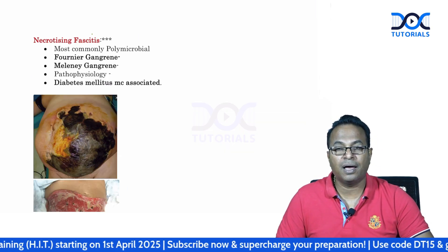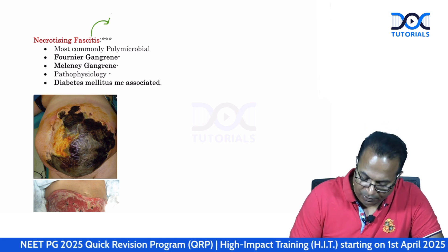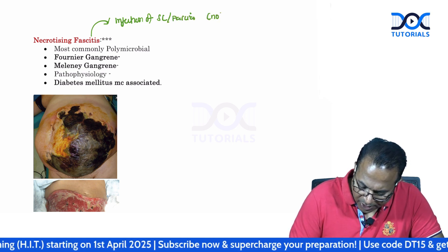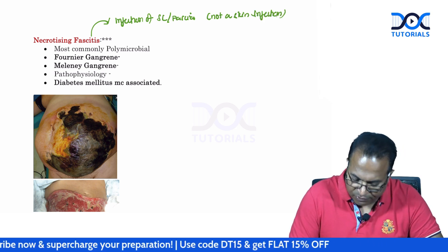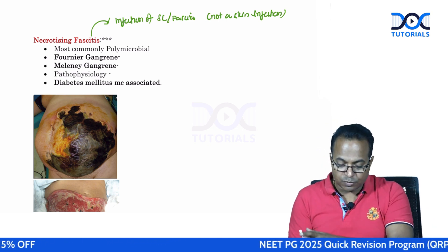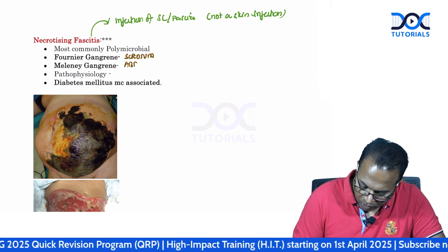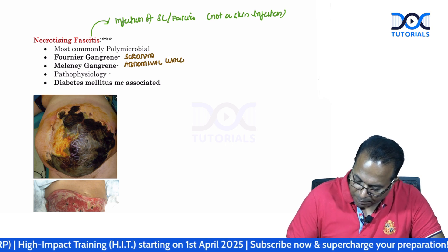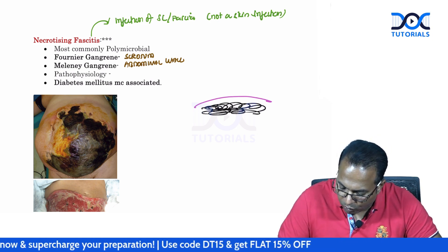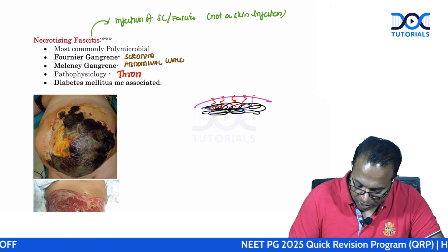One of the worst infections we see in surgery is Fournier's gangrene and necrotizing fasciitis. Necrotizing fasciitis is an infection of the subcutaneous tissue and fascia — please remember it is not a skin infection. It goes below the skin into the subcutaneous layer and deeper fascias, and is most commonly polymicrobial. Necrotizing fasciitis of the scrotum is called Fournier's gangrene; of the abdominal wall it is called Meleney's gangrene. The underlying tissues become gangrenous due to subdermal vascular thrombosis — thrombosis of the subdermal vessels.